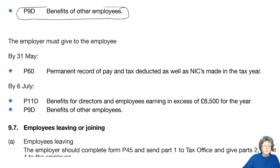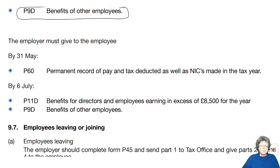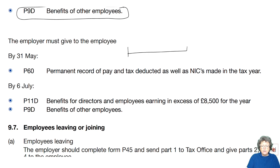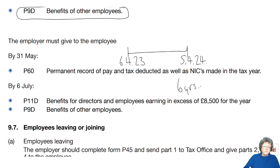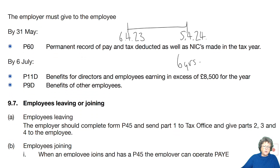By the end of May, which is the last pay run, you have to give a form P60. That P60 is a record of everything you earned in the tax year between the 6th of April 2023 and the 5th of April 2024. That has to go to each individual, and you have to keep a record of it for six years. You also have to have a copy of your P11D.